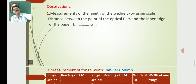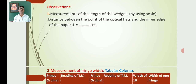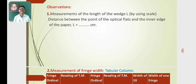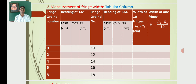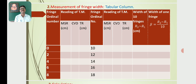For observations, the length of the wedge L is measured using an ordinary scale as the distance between the point where the optical glass plates are in contact and the inner edge of the paper. L may typically be around 4 to 5 centimetres. Readings are then taken using the travelling microscope from the main scale and the vernier scale.